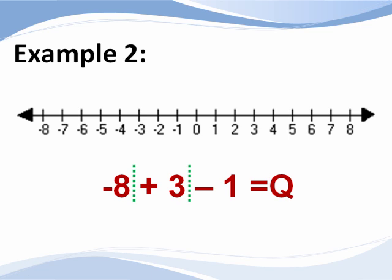To combine these numbers, we start at negative 8, move 3 spaces to the right, and then move 1 space to the left. The answer is negative 6.